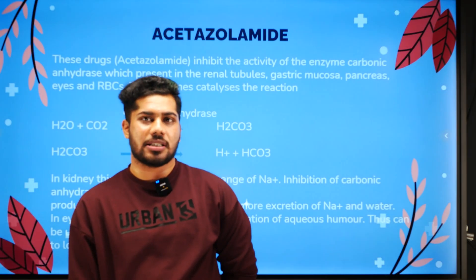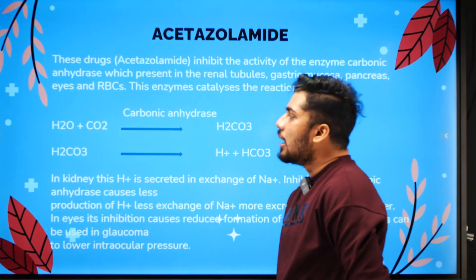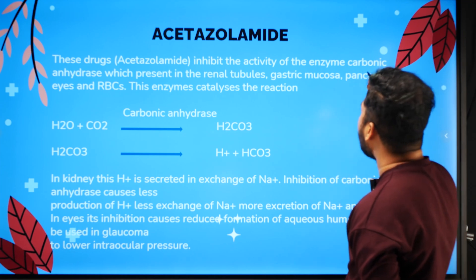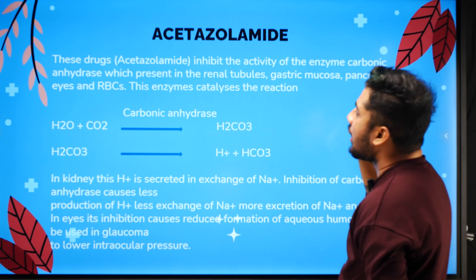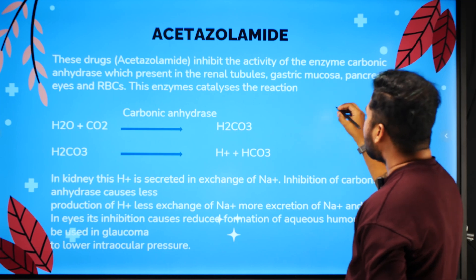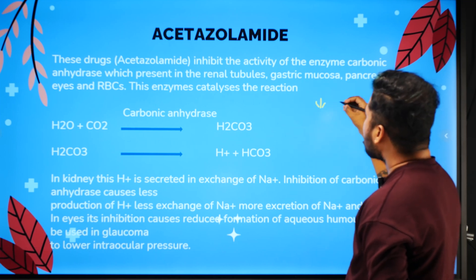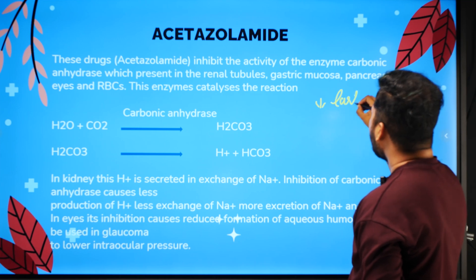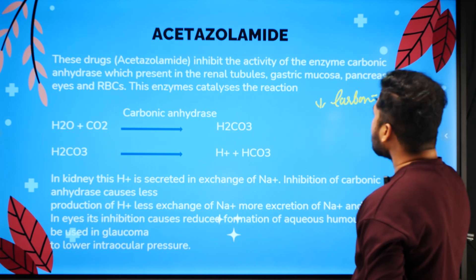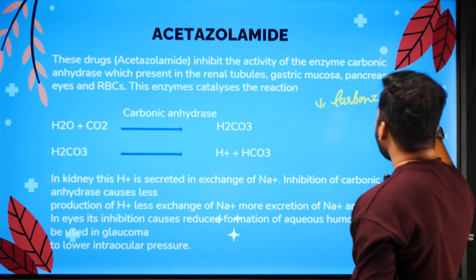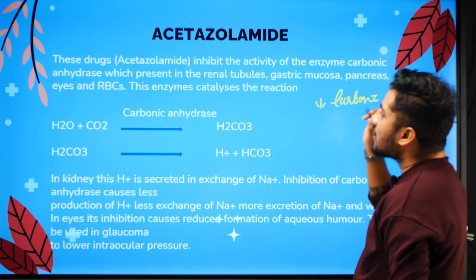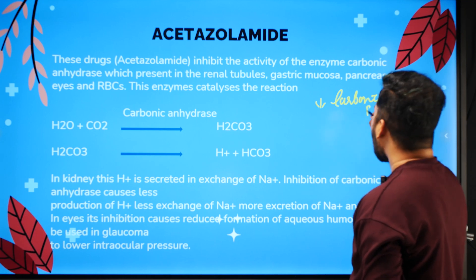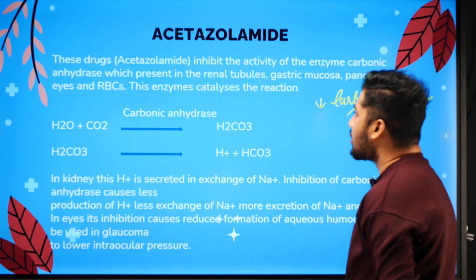Loop diuretics are used in CCF, acute left ventricular failure with pulmonary edema, nephrotic syndrome, and developing renal failure. They are very strong — stronger than thiazides.